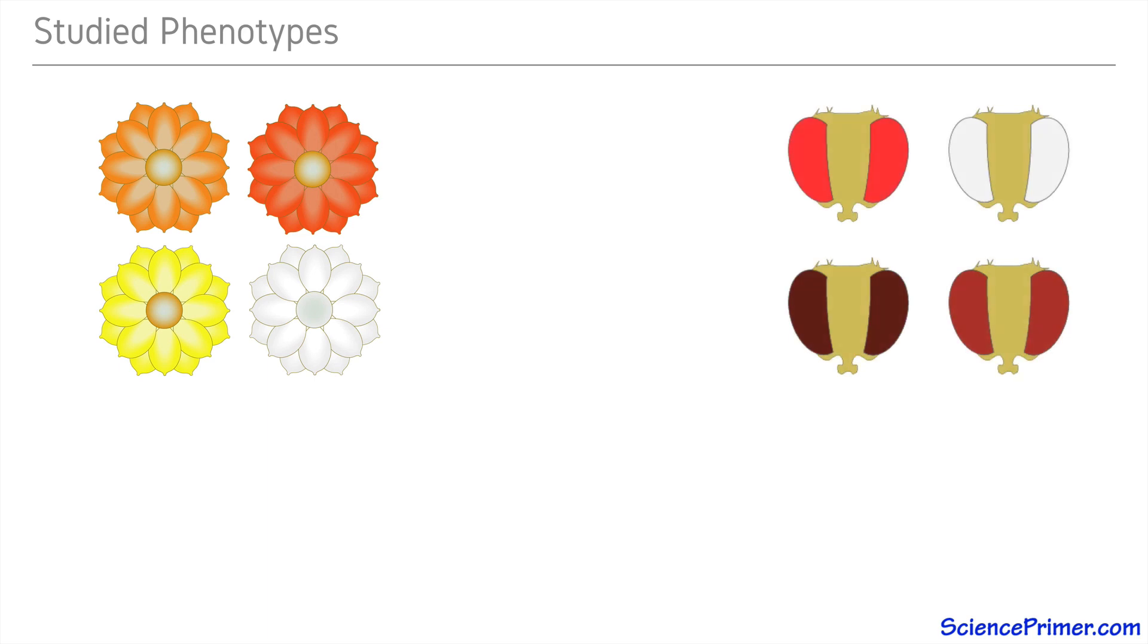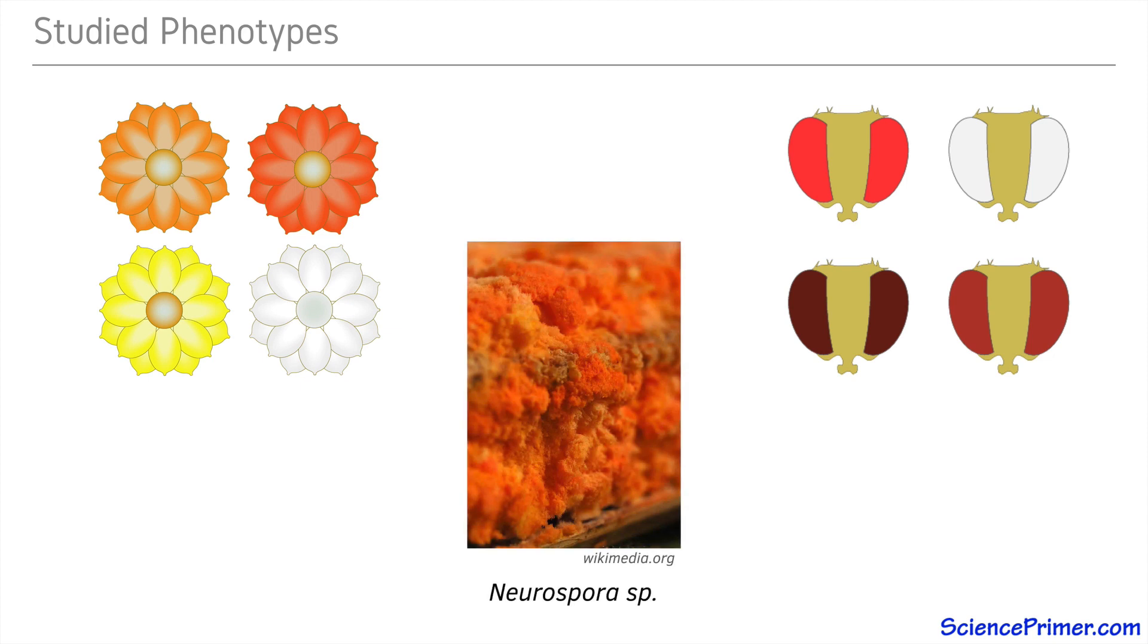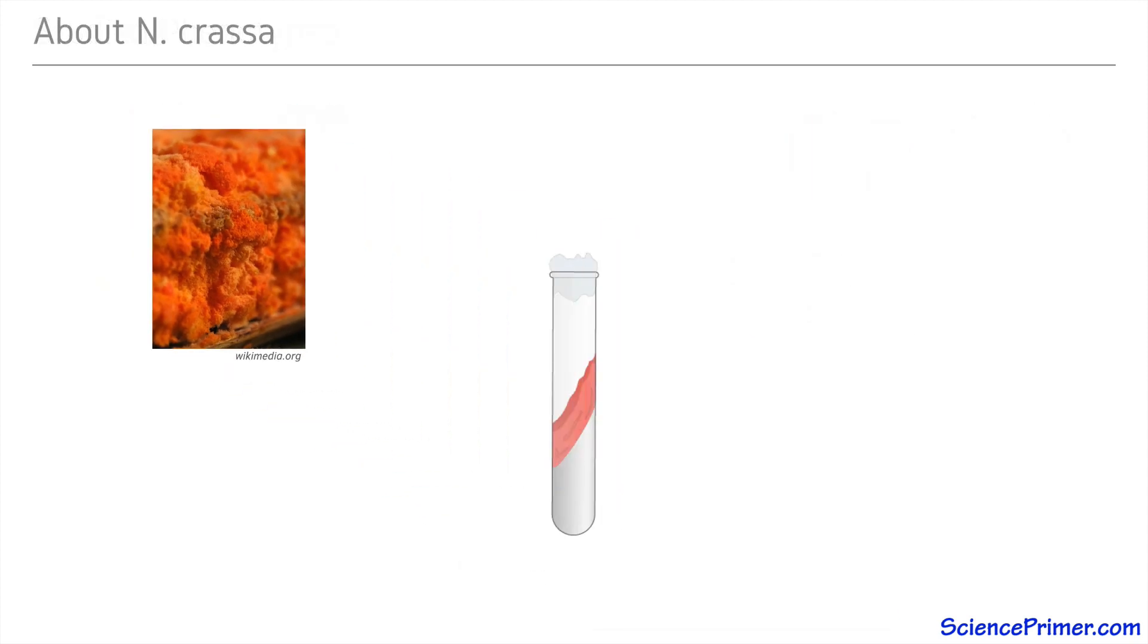These traits were easy to see and screen for, but use of these animal and plant species made it difficult to identify the connections between the genetic profiles of each individual and the specific biochemical steps involved in the expression of these phenotypes. To create a clear understanding of the relationship between genes and enzymes, Beadle and Tatum chose to study the red bread mold Neurospora crassa. This fungal species had a number of characteristics that made it an ideal research organism.